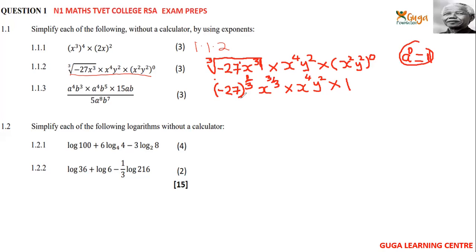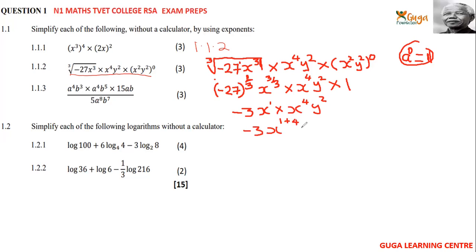Negative 27 to the power of 1/3 equals negative 3. Then 3 to the power of 3 over 3 gives x to the power of 1. Multiplied by x to the power of 4 and y to the power of 2. Adding exponents for the same base: x to the power 1 plus 4 equals x to the power 5. The final answer is negative 3x to the power 5, times y squared.